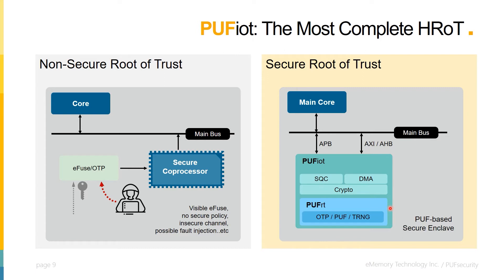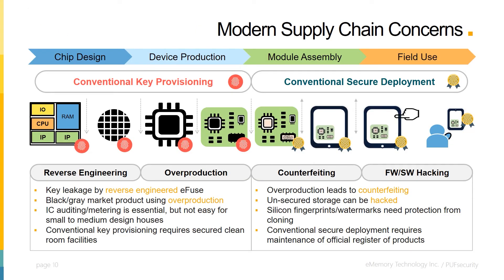In the following slides, we will introduce the modern supply chain, its issues, and how PUF-IoT can overcome them. Modern supply chains are a ripe target for hackers, because their segmented nature spans the globe, making complete oversight a tough task. In this diagram, we see the modern electronic supply chain divided into four stages: chip design from concept to finished design; device production including integration, fabrication, testing, and packaging; module product assembly to create the finished product; and in-field use, where products are deployed to end users for provisioning and configuration. Each segment faces a unique challenge, such as reverse engineering, overproduction, counterfeiting, or hacking.